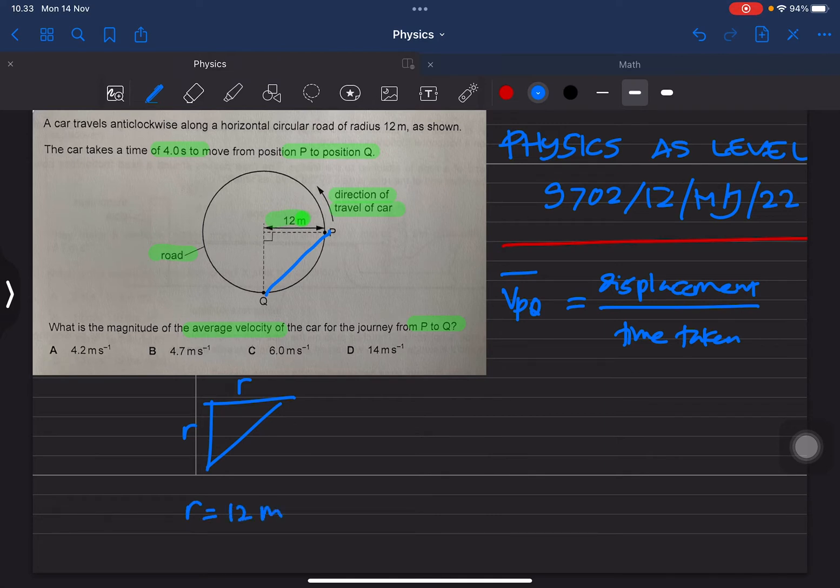So this distance PQ is the same as the root of 12 squared plus 12 squared. This is the same as 12 squared times 2. When we root it, this is the same as 12 root 2.